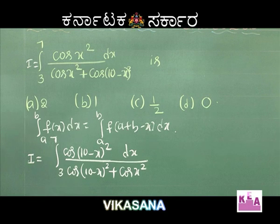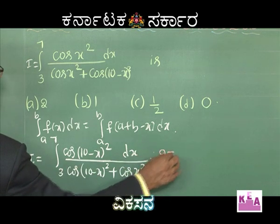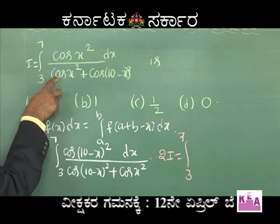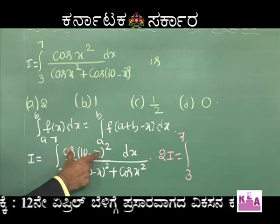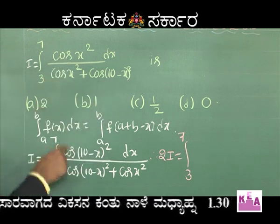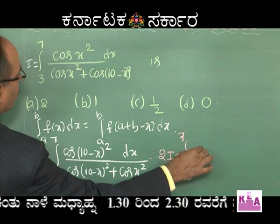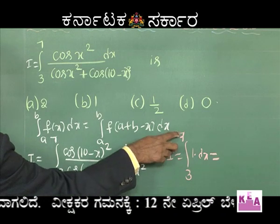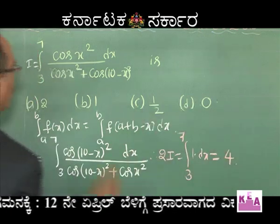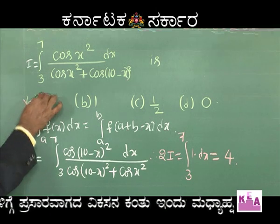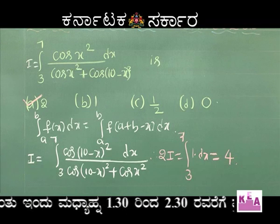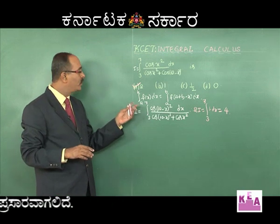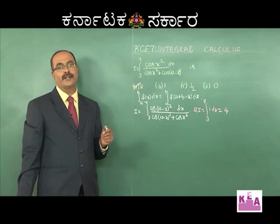Adding both expressions: 2i = ∫₃^7 [cos²x + cos²(10-x)] / [cos²x + cos²(10-x)] dx = ∫₃^7 1·dx = [x]₃^7 = 7 - 3 = 4. Therefore i = 2, and option a is correct. This is a simple but important problem from a CET entrance exam.